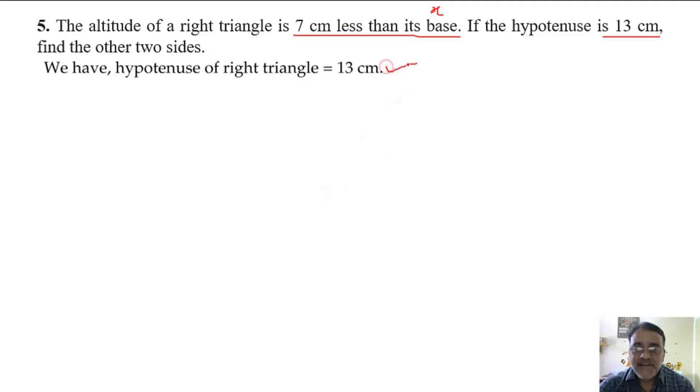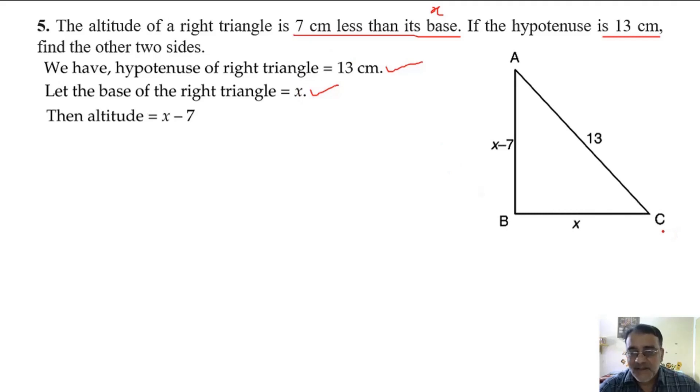So hypotenuse is given as 13 cm. Let the base be x, so altitude will be x minus 7. This is the figure. We can use Pythagoras theorem. If you apply Pythagoras theorem, what will you get?